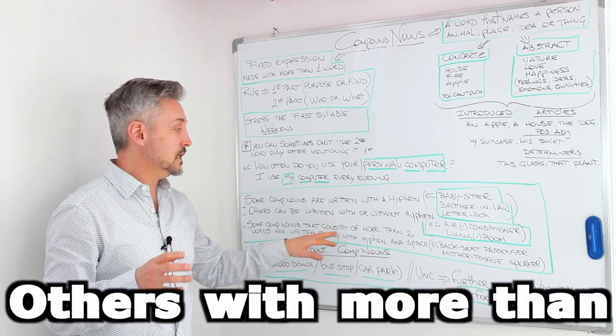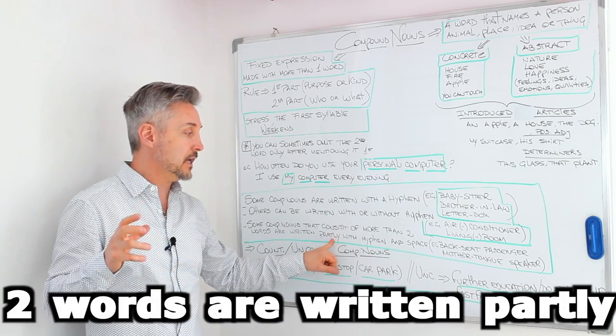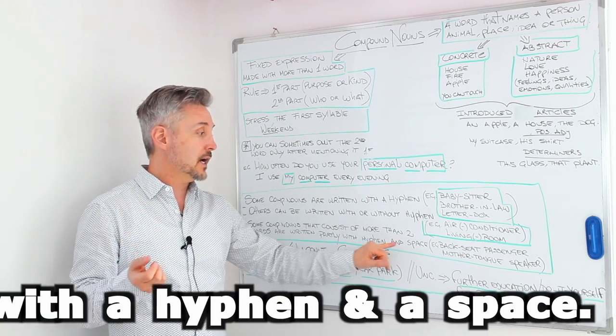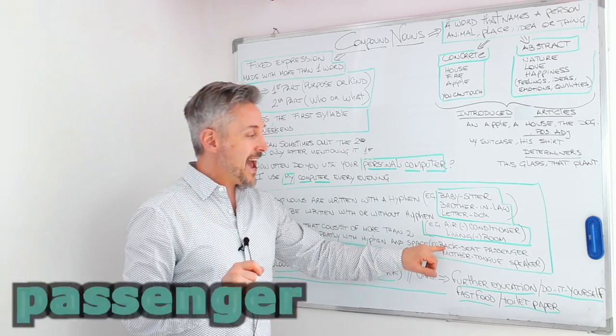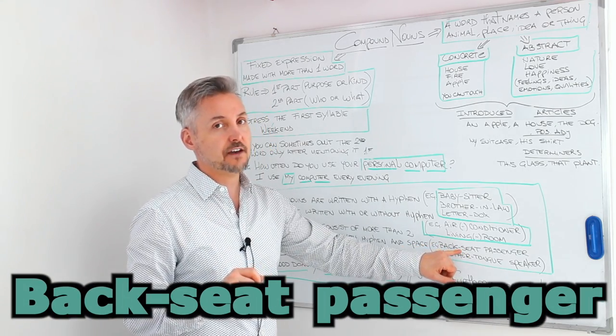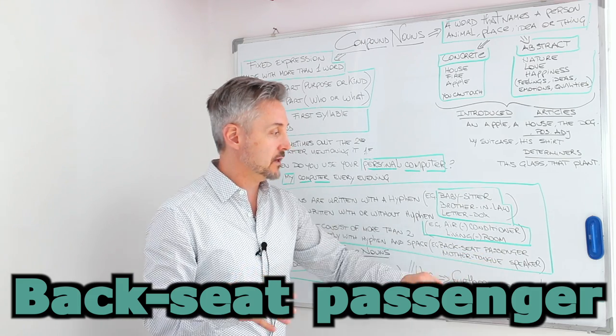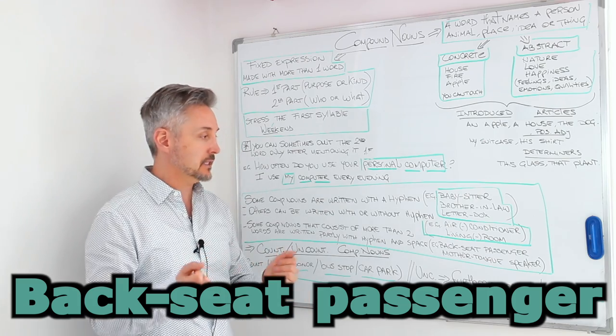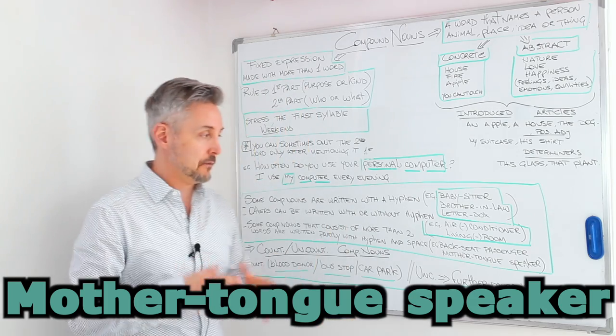Some compounds that consist of more than two words are written partly with a hyphen and a space. For example, backseat, and here we have a hyphen, backseat passenger. No hyphen. We just add a space. Mother tongue speaker, for example.